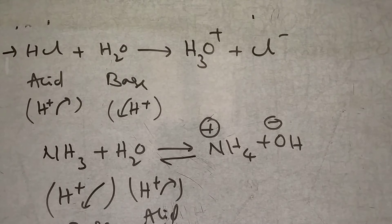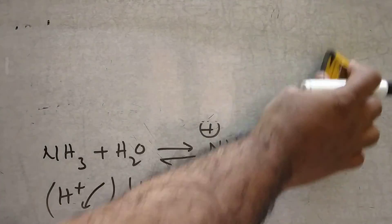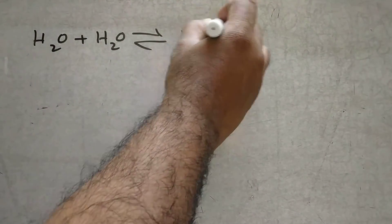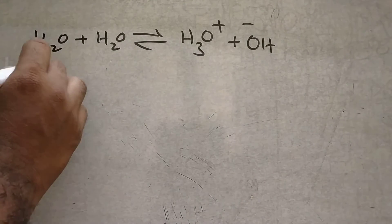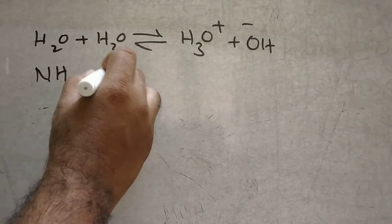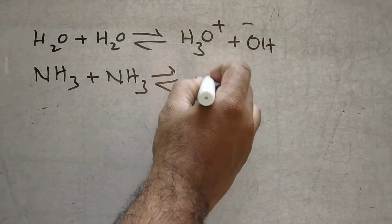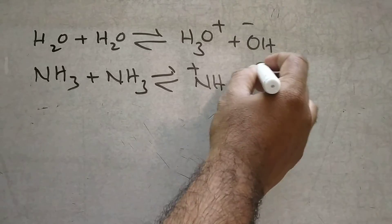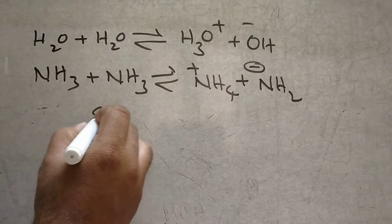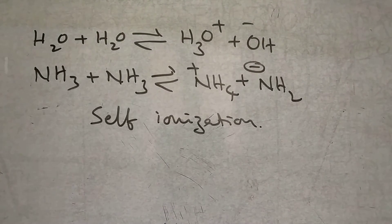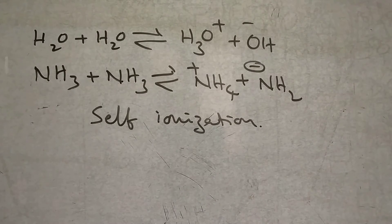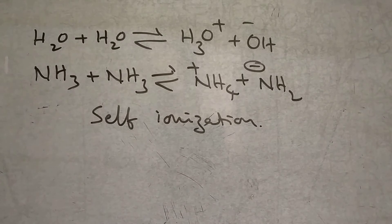We can say this is self-ionization — water reacting with water to form H3O⁺ and OH⁻. This is called self-ionization. Another example of self-ionization: ammonia reacts with ammonia in dynamic equilibrium to form ammonium ion (NH4⁺) and NH2⁻. So just as water reacts with water to form hydronium and hydroxide ions, ammonia reacts with ammonia to form ammonium ion and amide ion. This is self-ionization.